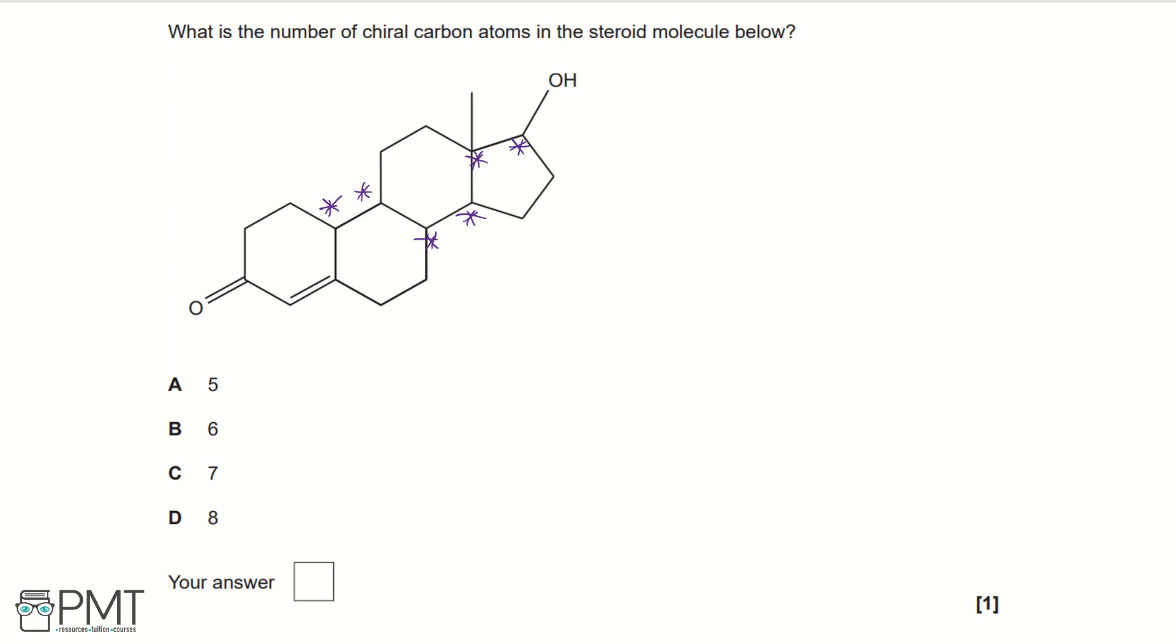At each of these chiral carbons, there are four different functional groups attached to the carbon. And this is the definition that you will need to know if you're asked to define it later on in the exam.